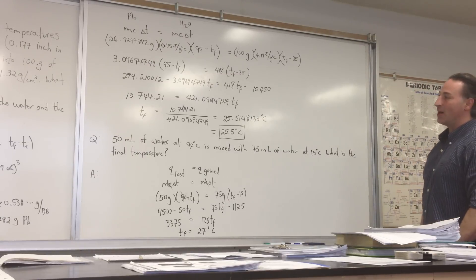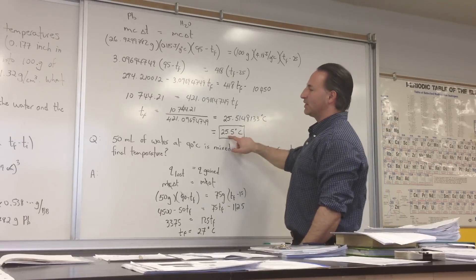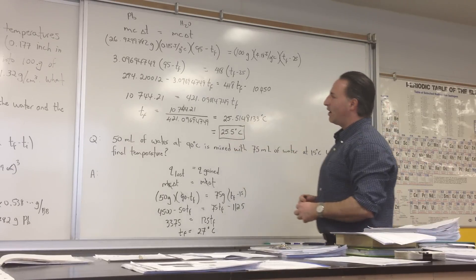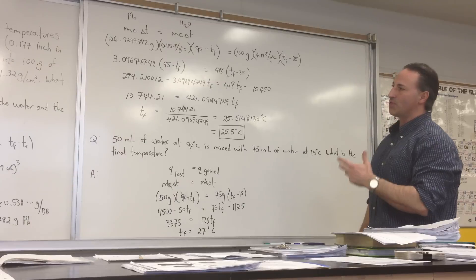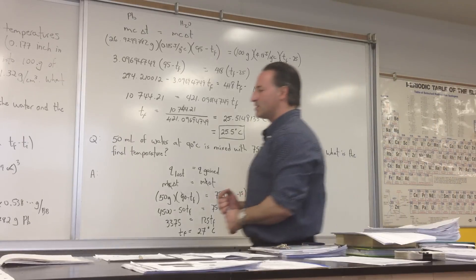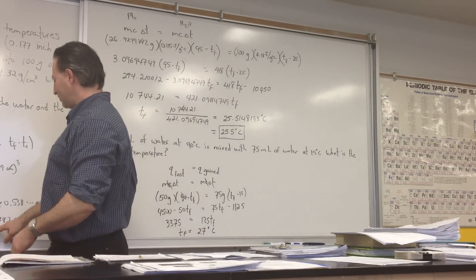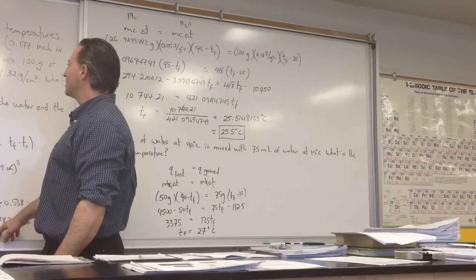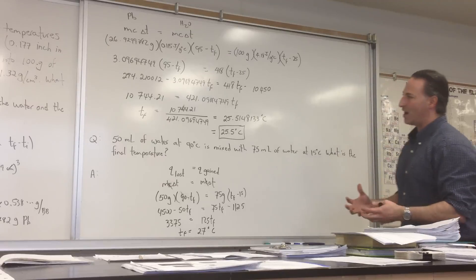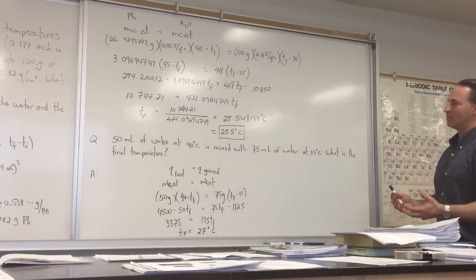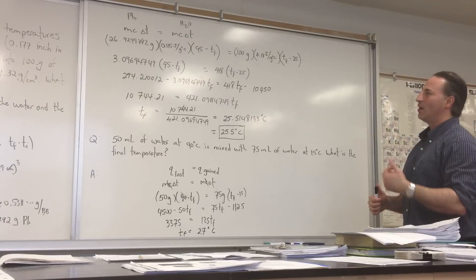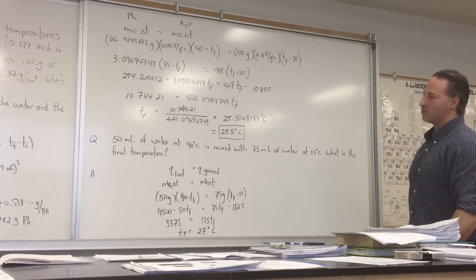Which is surprising because it's just barely putting a dent in the temperature of the water. But when you stop and think about how the heat capacity of water is some 36 times higher than the heat capacity of lead, and the fact that there's only 26 grams of lead, or roughly 27 grams of lead, versus 100 grams of water, then it stands to reason that you have 150 times as much, roughly 150 times as much heat capacity required to change the temperature of the water.